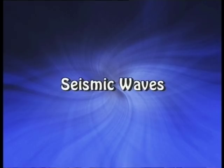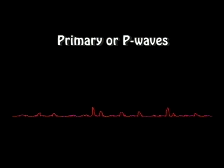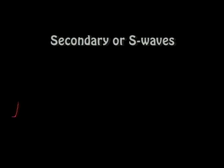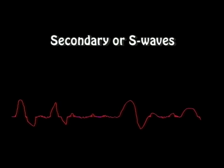Seismic waves: during earthquakes, a number of seismic waves are generated. First, primary or P waves, also called push and pull waves, are fastest in velocity and therefore reach seismic stations first. They are like sound waves and can transmit through solids, liquids and gaseous media. Secondary or S waves, also called shear waves, are slower than primary waves and reach after them. They are like light waves and can transmit through solids only.